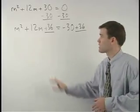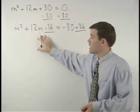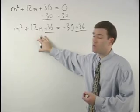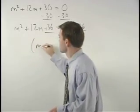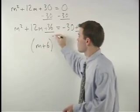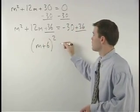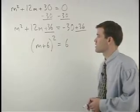Notice that the left side now factors as m plus 6 times m plus 6, or m plus 6 squared. The right side simplifies to 6.